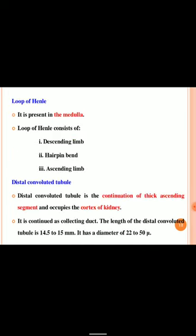The loop of Henle is present in the medulla and consists of a descending limb, hairpin bend, and ascending limb. The distal convoluted tubule is the continuation of the ascending segment and occupies the cortex of the kidney, continued as the collecting duct. The length of the distal convoluted tubule is 14.5 to 15 mm and it has a diameter of 20 to 50 microns.